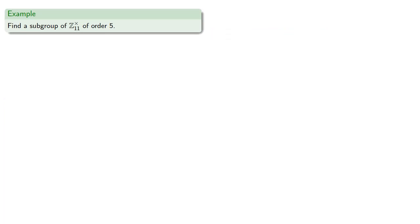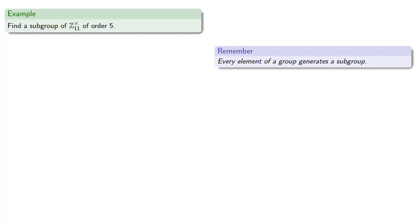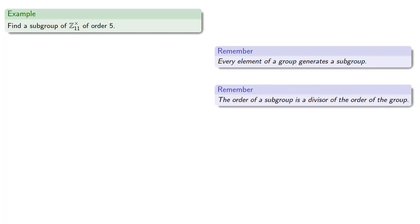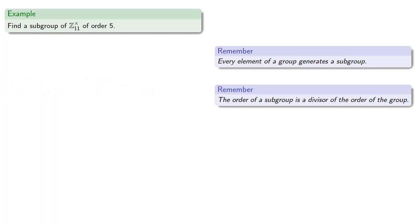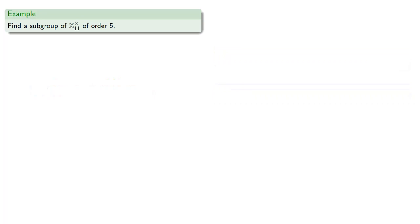Let's see if we can find a subgroup of the multiplicative group of integers mod 11 of order 5. Every element of a group generates a subgroup, and the order of a subgroup is a divisor of the order of the group. The multiplicative group of integers mod 11 has 11 minus 1, or 10 elements, so its subgroups could have order 1, 2, 5, or 10.